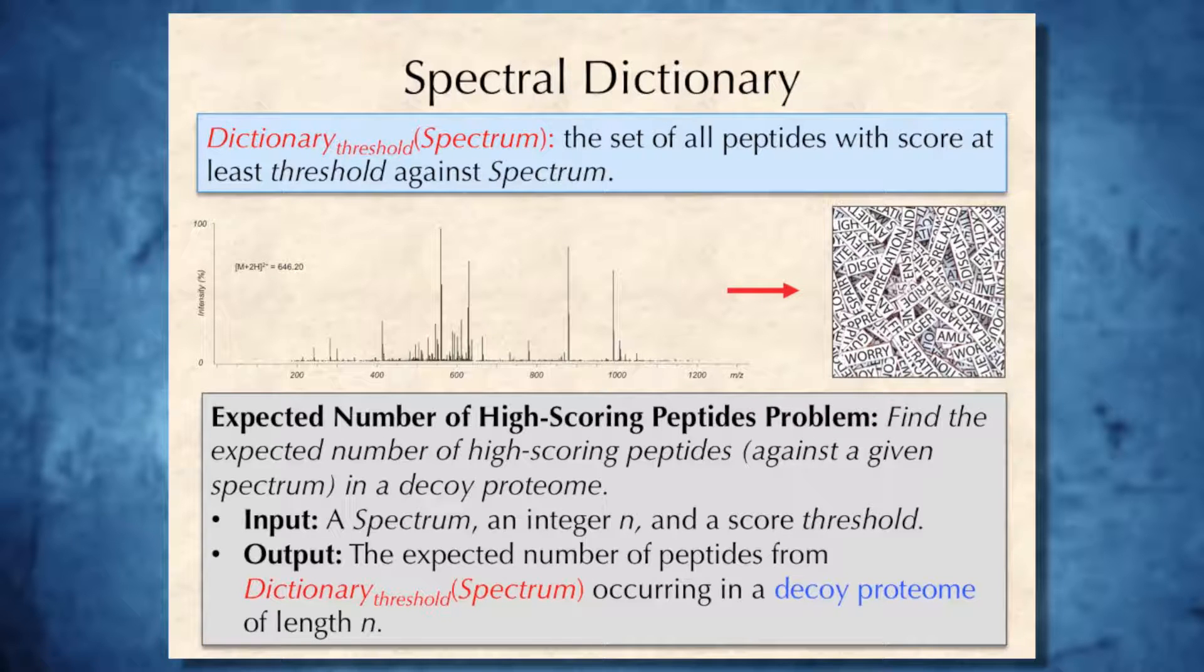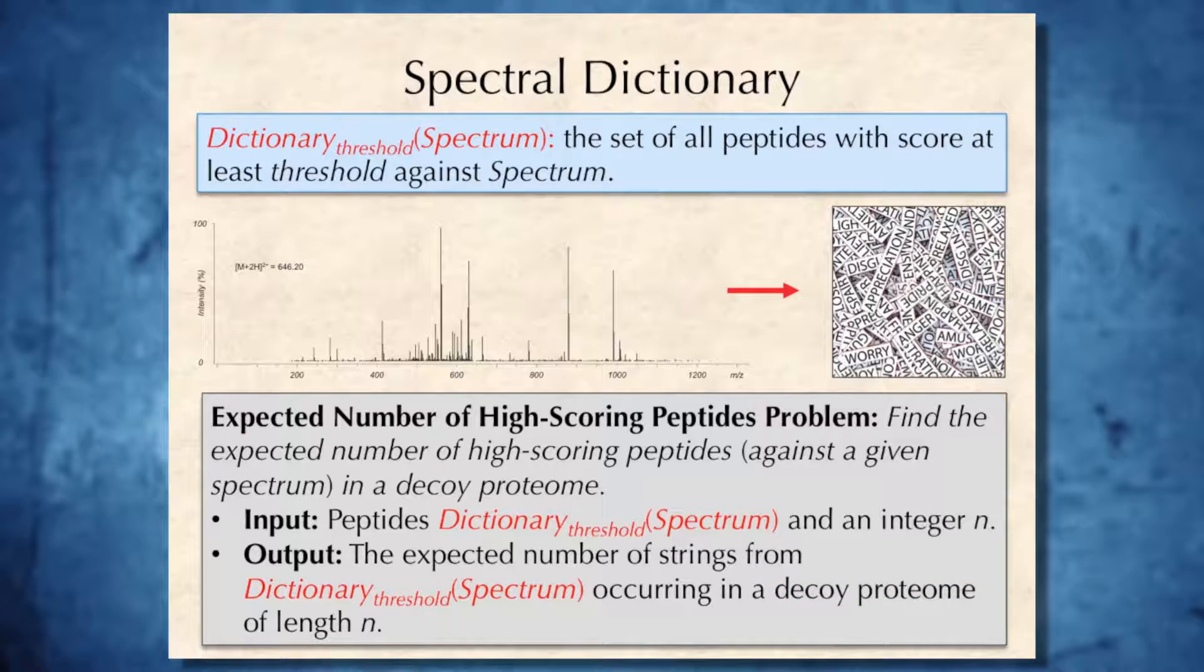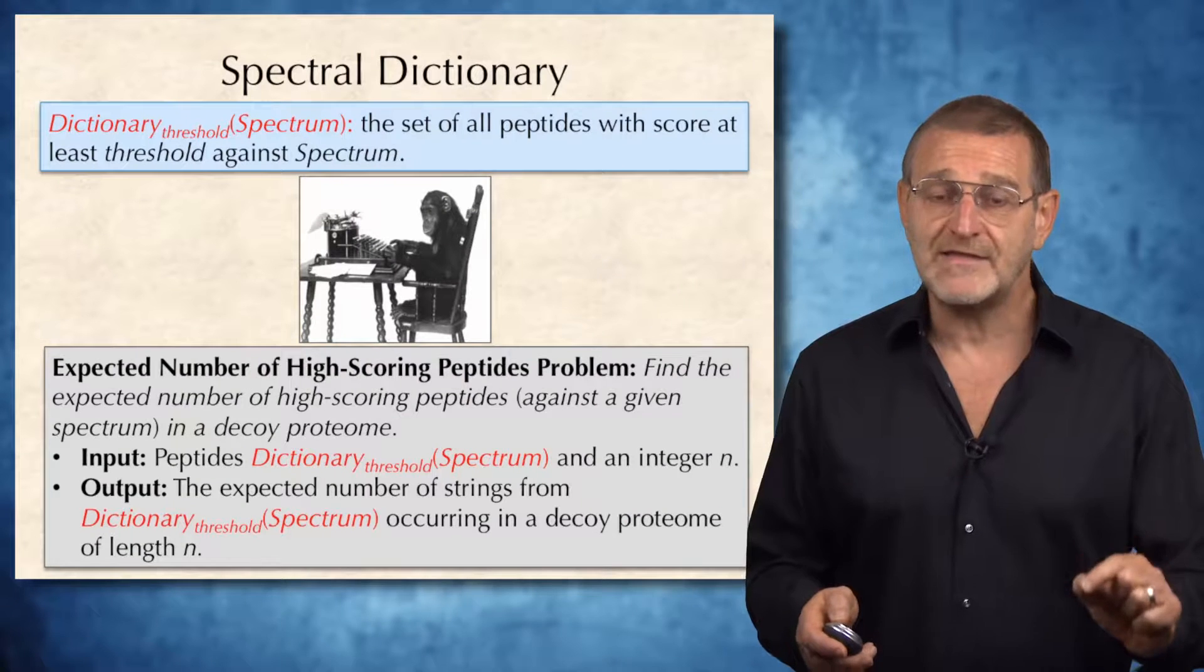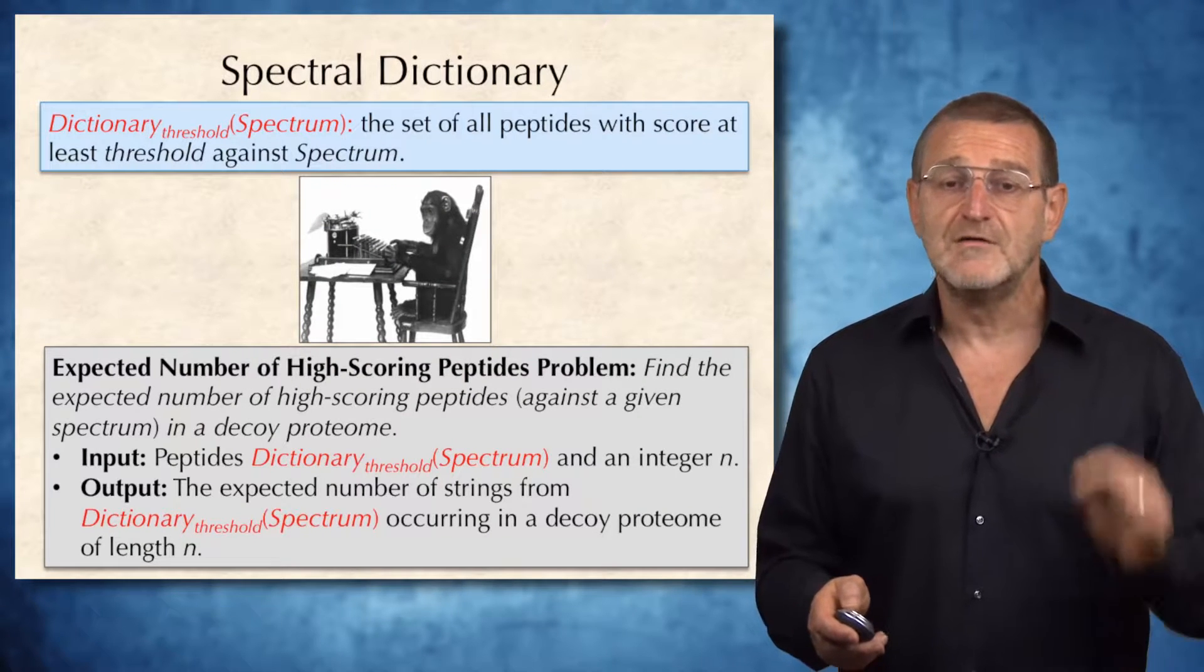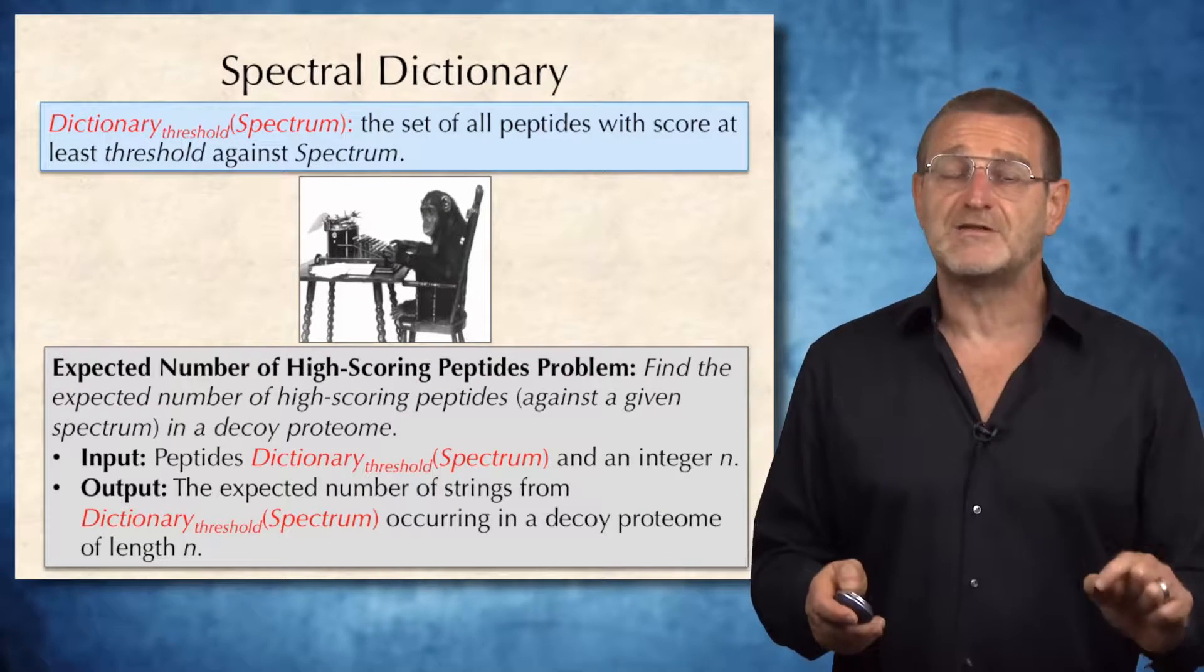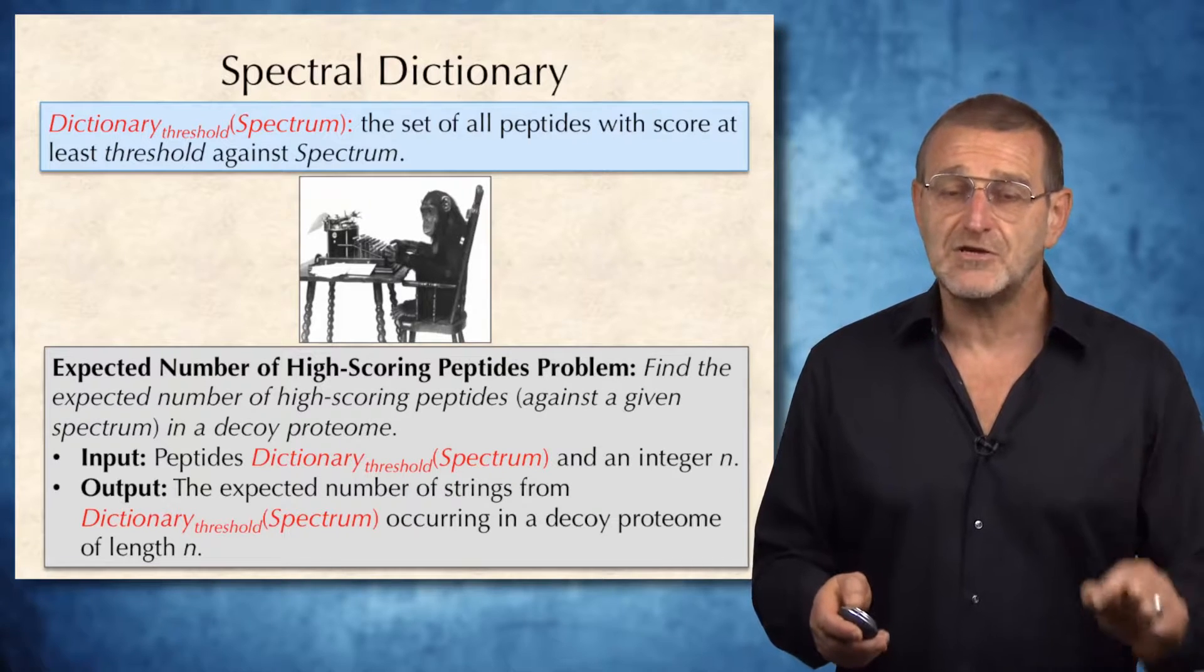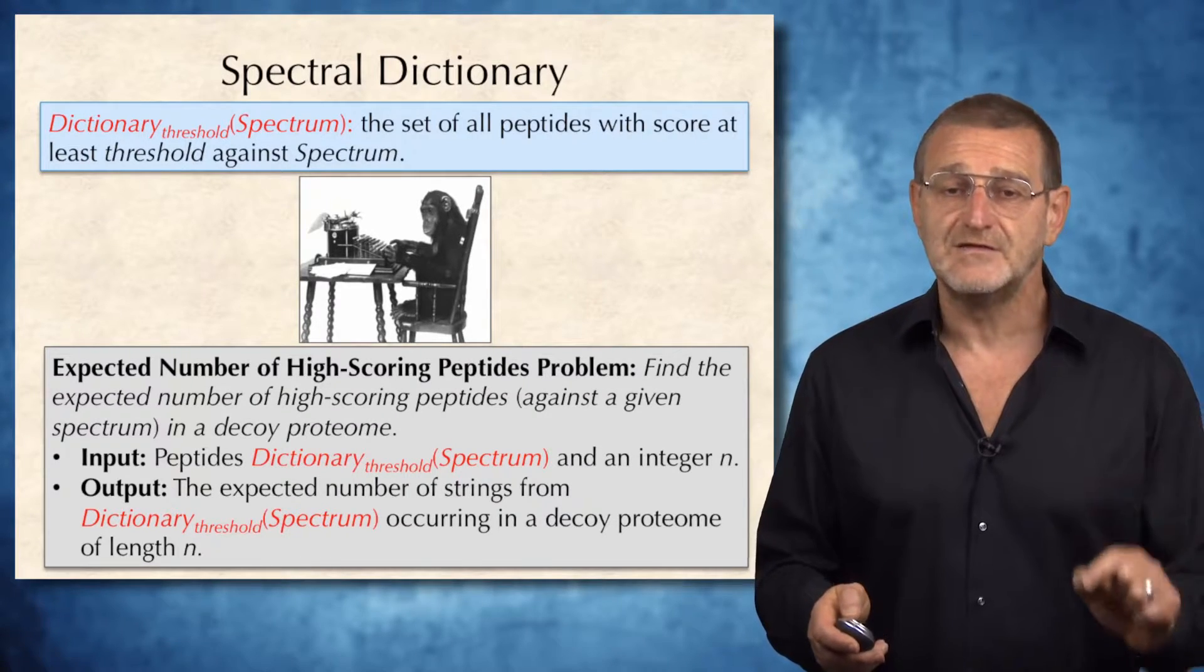We reformulated its output. Let's now reformulate its input. And the new input will be simply all peptides from dictionary of spectrum and an integer n, and output the expected number of strings from dictionary occurring in a decoy proteome of length n. Take a look at this problem. This is exactly the monkey and the dictionary problem for a specific set of peptides given by dictionary of spectrum under a given threshold.